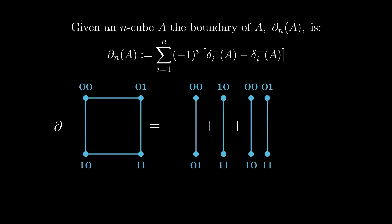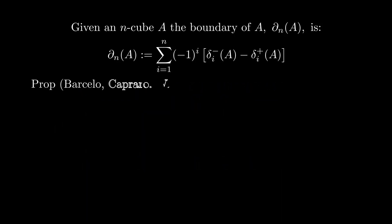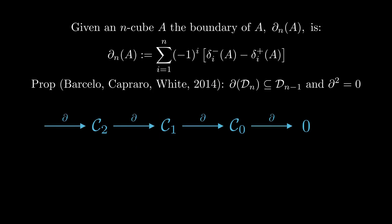We then have a proposition, which is due to Parcello, Caprero, and White from 2014, and that's that this boundary sends the degenerate subcomplex to the degenerate subcomplex, and that the boundary squared is equal to 0. So if in dimension negative 1 we set the r-module to be the trivial r-module, and del 0 to be the trivial map, we then have a valid chain complex of these Cn's.